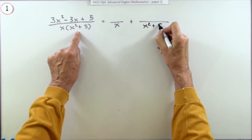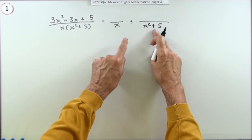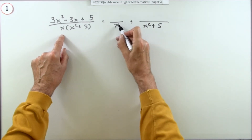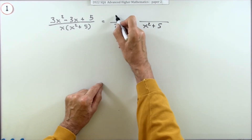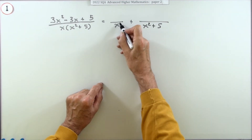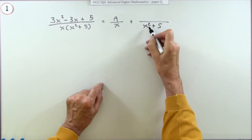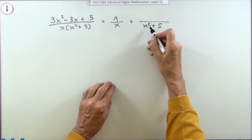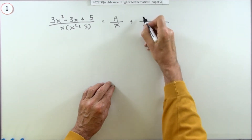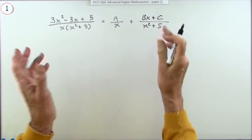So something over x and something over x squared plus 5, because those factors would form a single fraction. They've got to be proper fractions, so the degree of the numerator has to be less than the degree of the denominator. With just power one underneath, the numerator must be a constant. But with degree two underneath, you could have up to a linear term, so put Bx plus C.